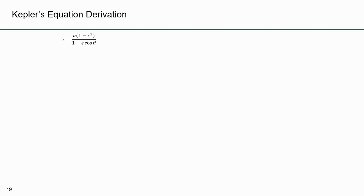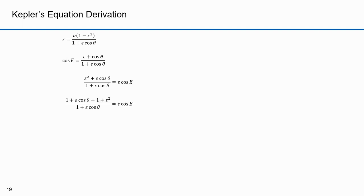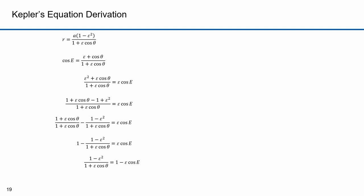We've expressed theta in terms of E and R in terms of theta. It would be simpler to express R in terms of E. Starting from cosine E equals (epsilon plus cosine theta)/(1 plus epsilon cosine theta), multiplying both sides by epsilon and rearranging — adding and subtracting 1 in the numerator — shows R equals A times (1 minus epsilon cosine E).